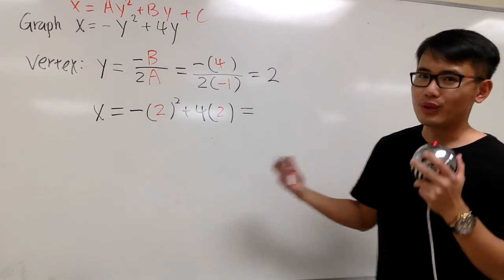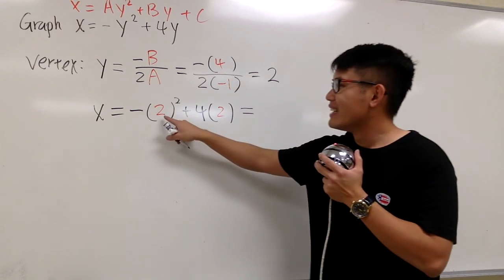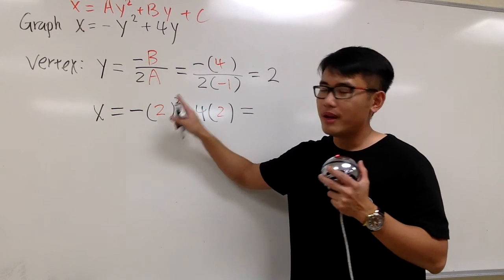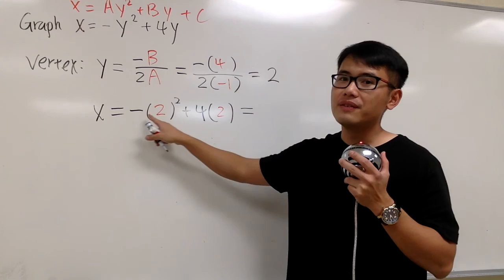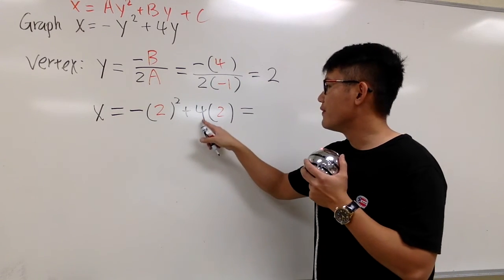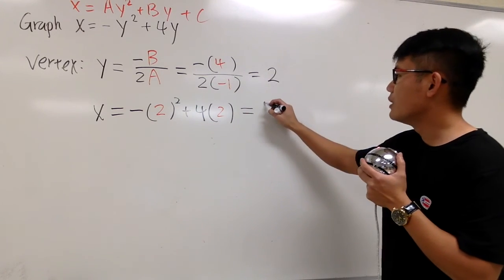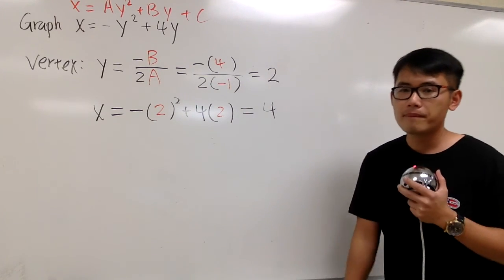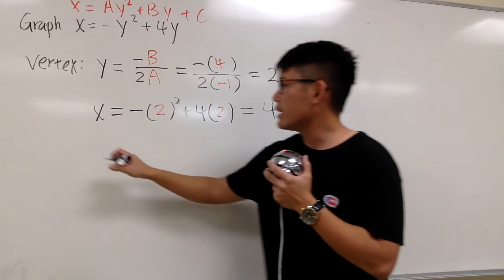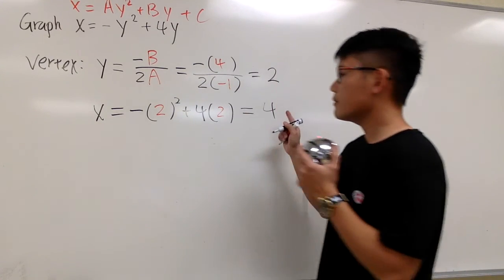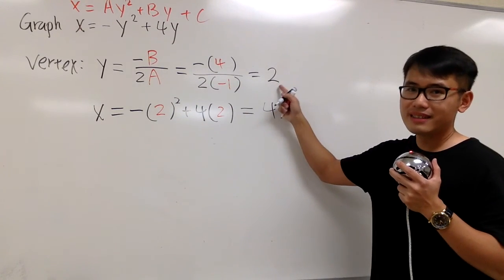And I'm just going to work this out for you. 2 squared is 4, but this is technically a negative 4. And 4 times 2 is 8. Therefore, negative 4 plus 8, altogether we have positive 4. So the vertex right here is going to be 4, 2.